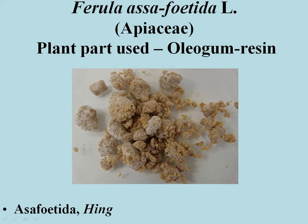Ferula asafoetida, which you know as Hing, which is called asafoetida. This is called Hing, and the useful part is called rhizome and roots, from which oleo gum resin is obtained, which we use as a condiment. It belongs to family Apiaceae, alongside Coriandrum (coriander), Cuminum (zeera/cumin), and the third is Hing — Ferula asafoetida.